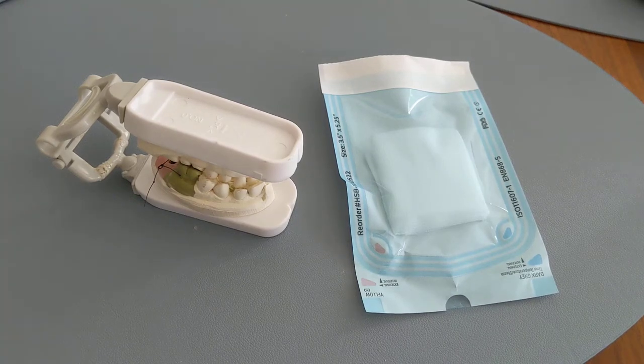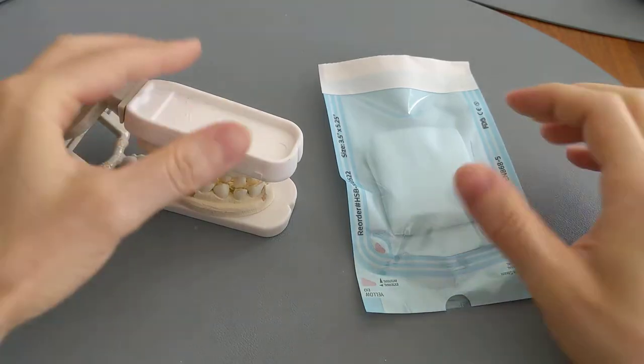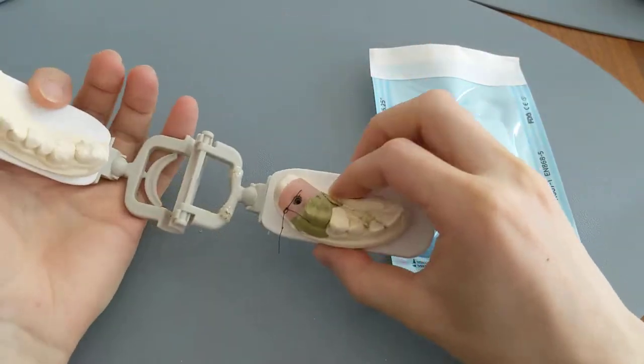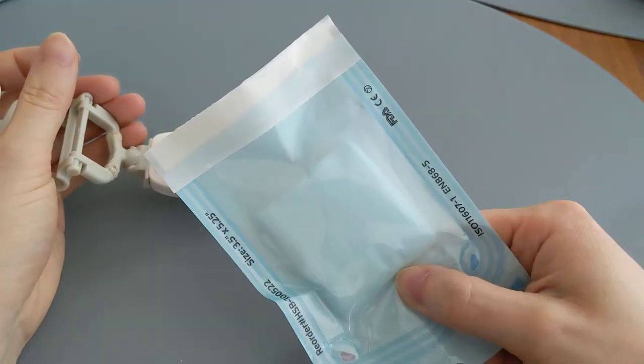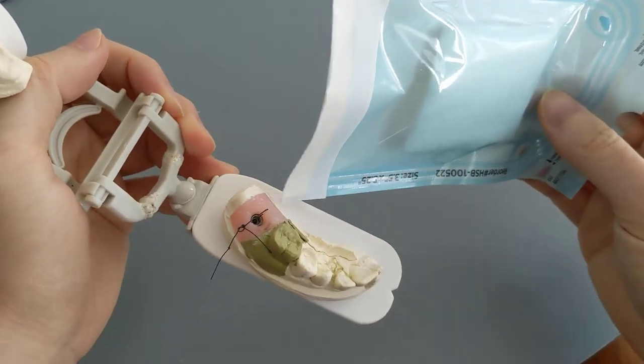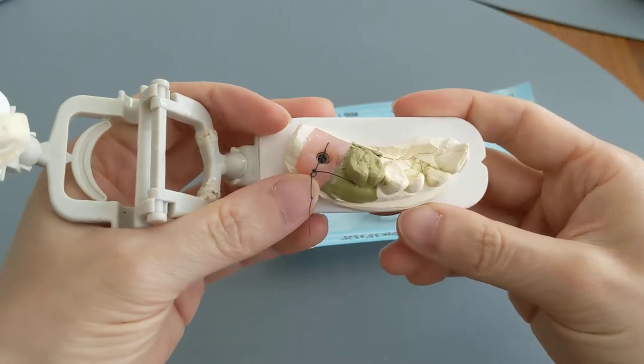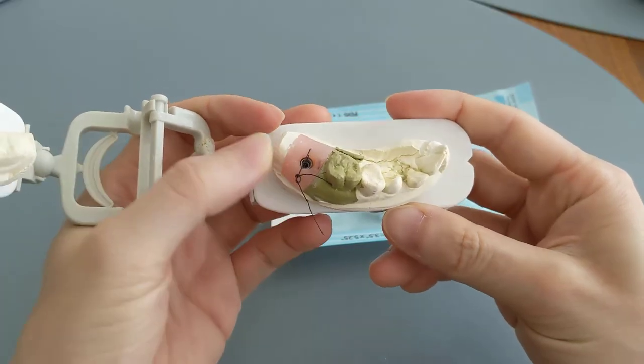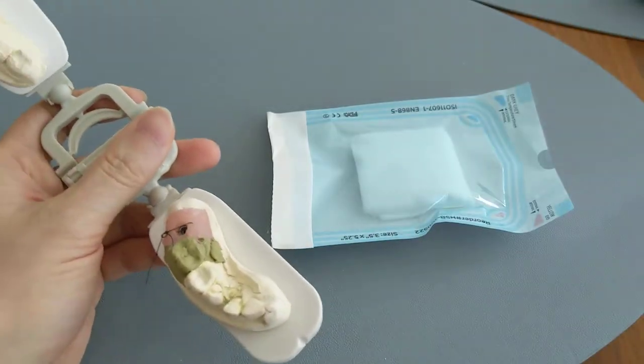Today I want to go over how to use gauze after a tooth extraction. It's really important to use gauze properly because this is the primary method for stopping the bleeding from your extraction socket. This applies to any type of tooth extraction, whether it's a molar, wisdom tooth, front tooth, or back tooth.